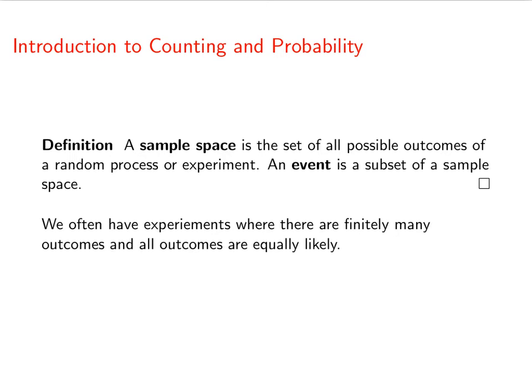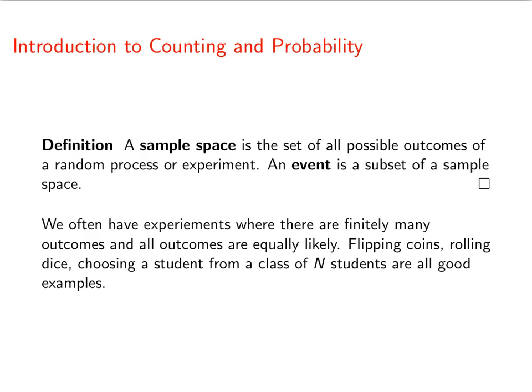We're often going to have experiments where there are finitely many outcomes and all of the outcomes are equally likely. Flipping coins, rolling dice, choosing students from a class of N students, these are good examples of outcomes, equally likely outcomes.